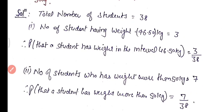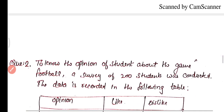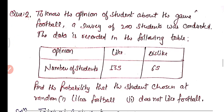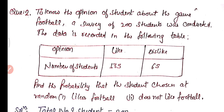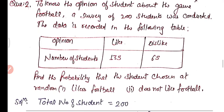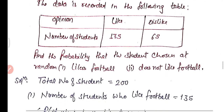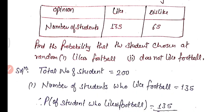Now proceed to question number 2. To know the opinion of students about the game football, a survey of 200 students was conducted. The data recorded: number of students who like football is 135, and students who dislike football is 65. Find the probability that a student chosen at random likes football, and the probability that a student does not like football.